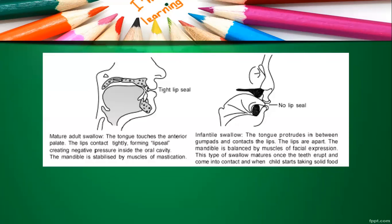In a mature adult swallow, the tongue touches the anterior palate, the lips contact tightly forming a lip seal, creating negative pressure inside the oral cavity, and the mandible is stabilized by muscles of mastication. In an infantile swallow, there is no lip seal — in order to attain that lip seal, the tongue comes forward, protrudes between the gum pads, and contacts the lip. The lips are apart, but the mandible is balanced by muscles of facial expression. This swallow pattern matures once the teeth erupt and the child starts taking solid food.